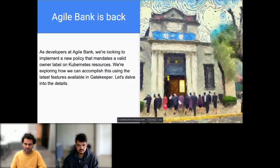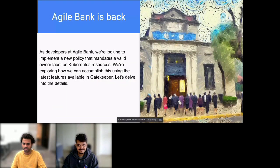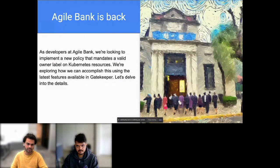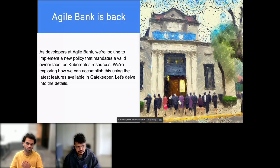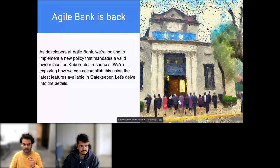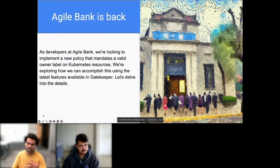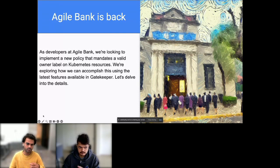Remember the Agile Bank from the last Gatekeeper webinar? We have this Agile Bank that was using Gatekeeper as a policy engine, and they're back with some exciting news. As the developer of the Agile Bank, we have decided to implement a new policy that requires a valid owner label on any Kubernetes resource. We're going to use the latest features available in Gatekeeper to make it happen.